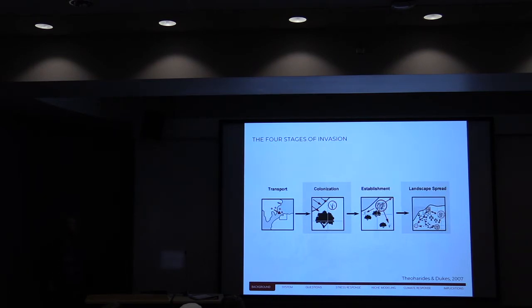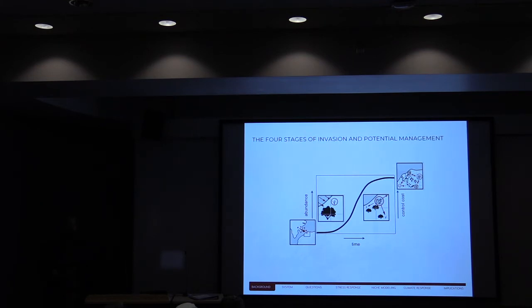Given that, the study of invasions usually takes into account four basic stages. There's transport, when the invader first arrives. Colonization, where it gets a foothold. Establishment, where it starts to reproduce. And then landscape spread is where it really takes over and there's a moving invasion front. A lot of things change during them. Among them would be the abundance of the invader, of course, and also in our hypothetical reaction to the invasion, the control cost. You can see there's an S-shaped curve where there's a very rapid rise.